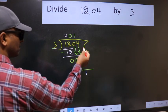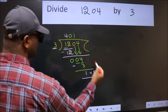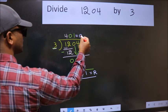No more numbers to bring down, so we stop here. This is our remainder and this is our quotient.